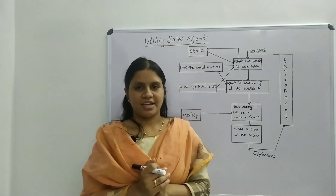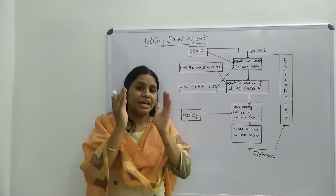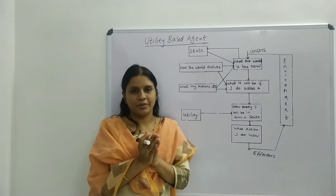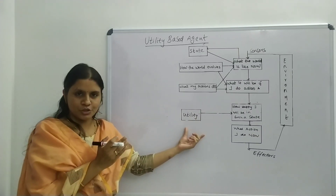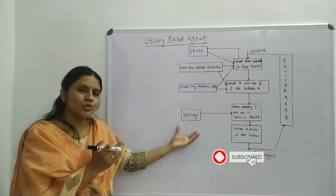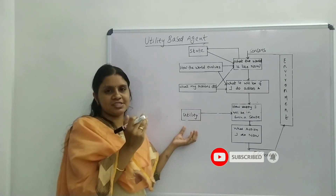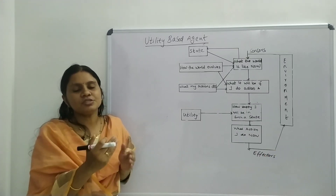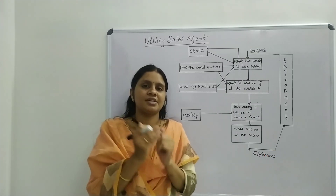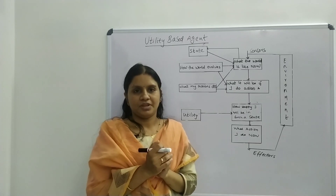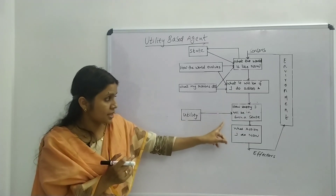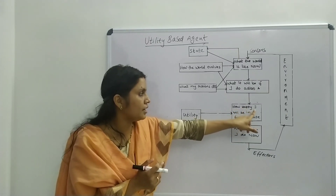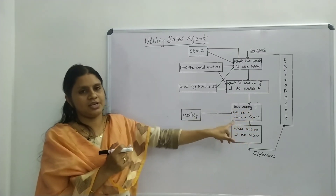Next is utility based agent. Utility based agent focuses on the utility, not the goal. There is a utility function which measures the degree of happiness — it deals with the happy and unhappy state of the agent. You can see a new block added: 'how happy I will be in such a state.'